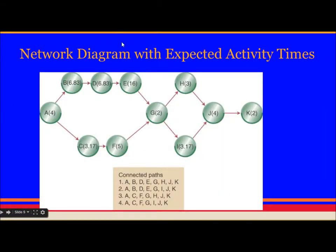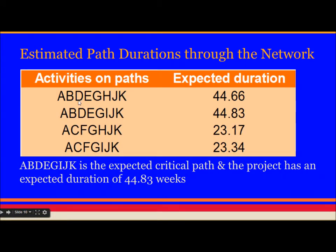Again we will draw a network diagram with expected activity times which we calculated from the table. We will just put the duration in each of them. And then again we will find out the connected path like this. There will be 4 paths as explained in the critical path method video.